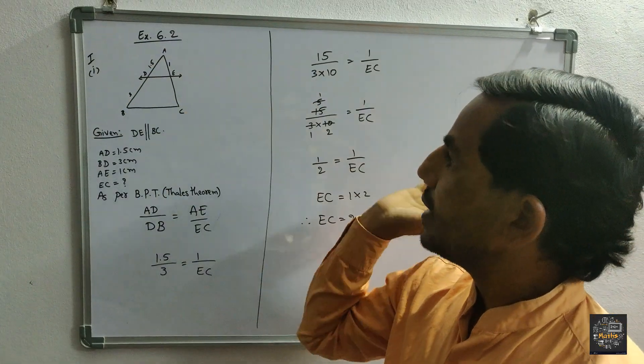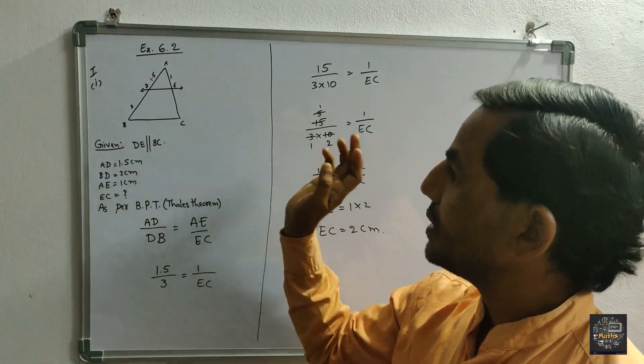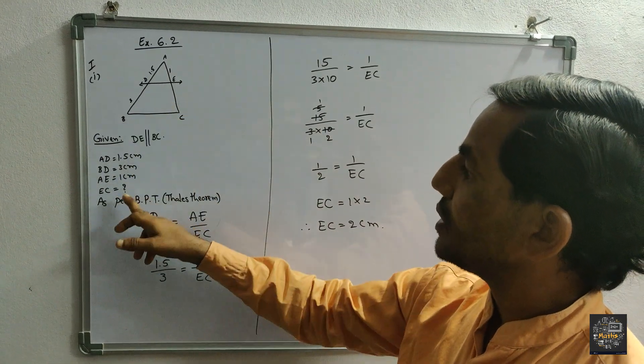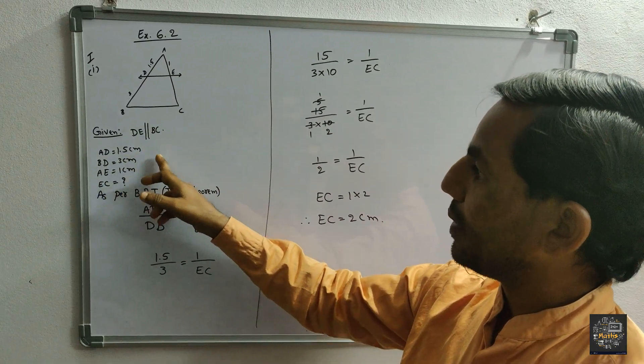Hi everyone, welcome to our channel Teaching of Rabhi. My name is Hari Rabhi. ABC is a triangle, DE is parallel to BC, already given. Some values are also given in the question: AD is equal to 1.5 cm.